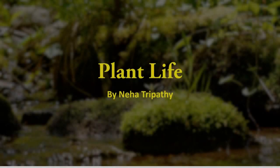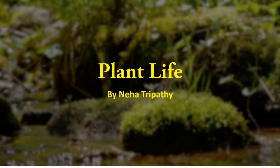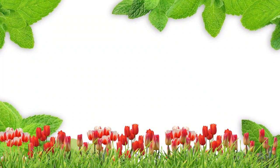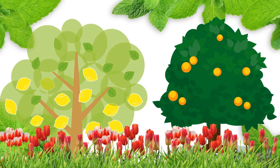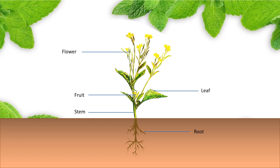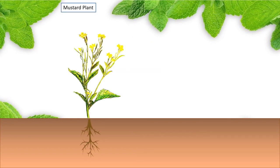Hello everyone, so today we are going to read about plant life. In our surroundings we have numbers of plants and trees. They may differ in shape and size but all the flowering plants have some common characteristics. Basically, all the flowering plants are similar because all plants possess root, stem, leaf, fruits and flower. A typical flowering plant such as a mustard plant consists of two main systems.